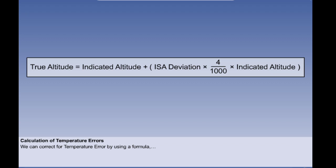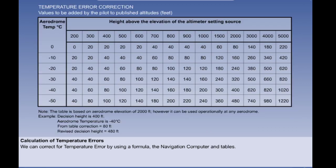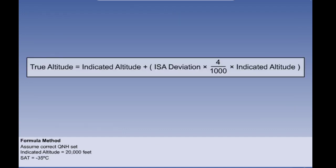There are three main methods of establishing temperature error so that we can work out a safe indicated altitude in order to ensure that we are at or above a required true altitude. The first is a calculation based on a formula. The second is the navigation computer. And we can also use tables, particularly for the decision height or decision altitude case.